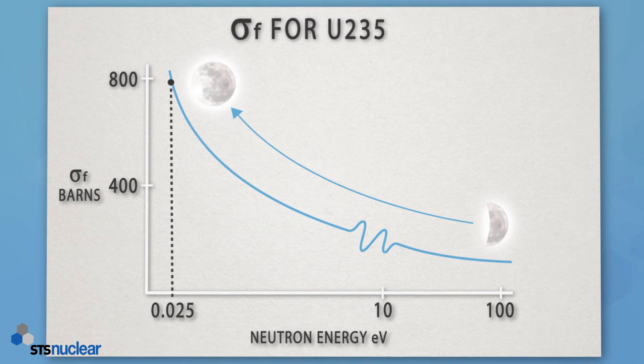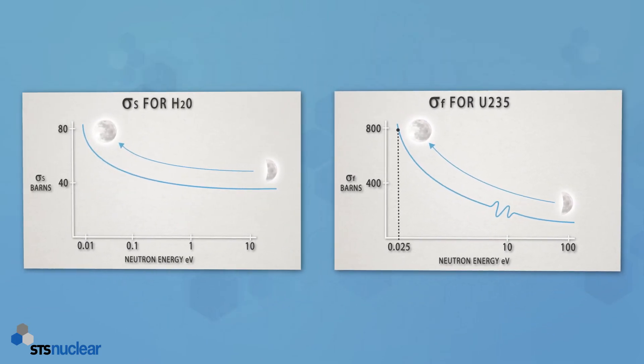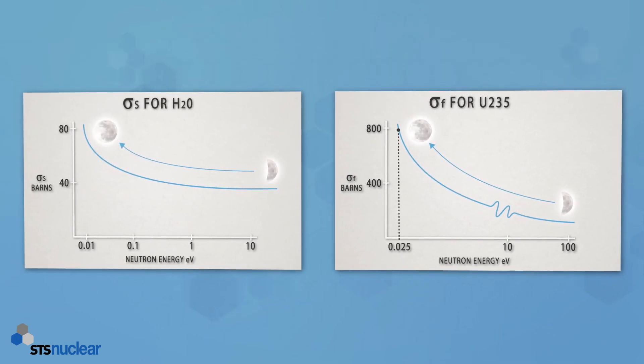So that's two examples for microscopic cross-section, looking at two different nuclei. I hope that gives you a good idea of how we increase the probability of these reactions occurring. We'll finish here, but in the next tutorial I'd like to develop this idea to look at the probability of reactions occurring in a unit length of material.